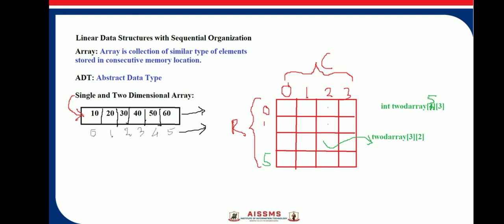As mentioned, an array is defined as a collection of similar type elements. Arrays can be single-dimensional or multi-dimensional.